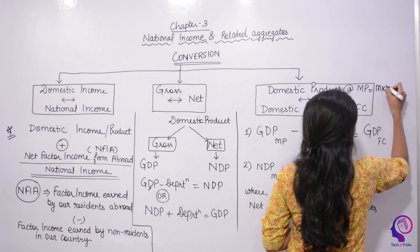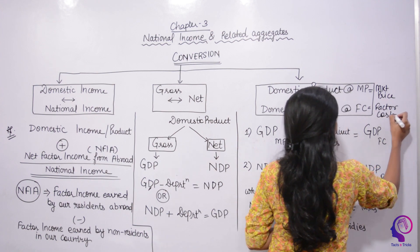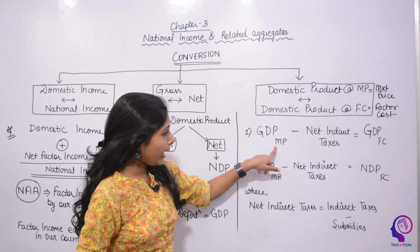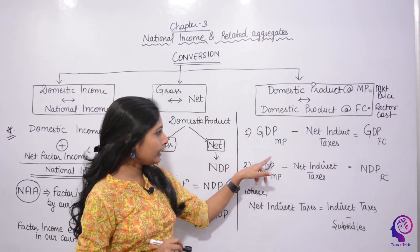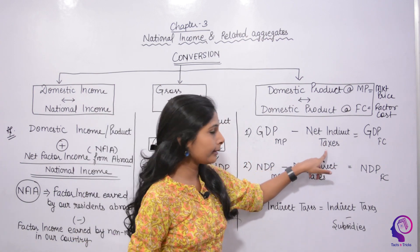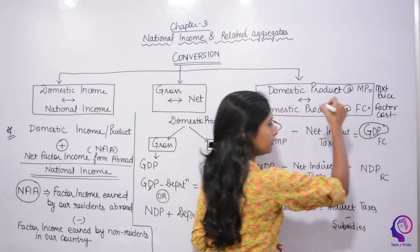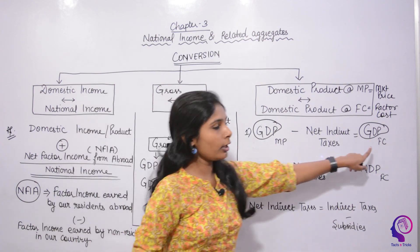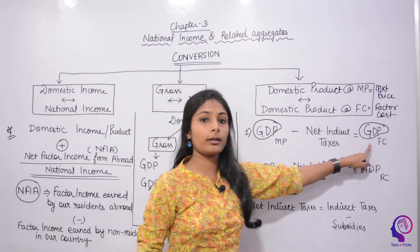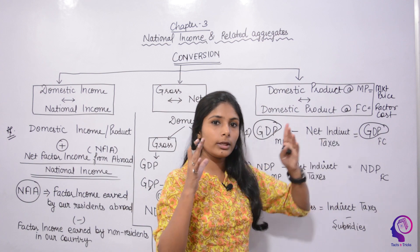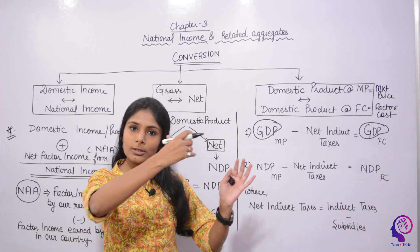MP means market price, and FC means factor cost. The difference between MP and FC is the net indirect taxes. If you remove the net indirect taxes from market price, you will get factor cost. Factor cost is the initial production cost — when taxes are added, it becomes market price. So: Market Price minus Net Indirect Taxes equals Factor Cost.